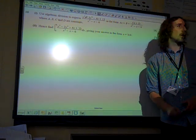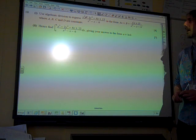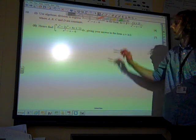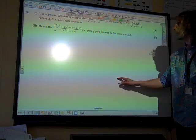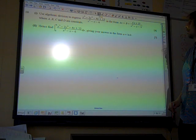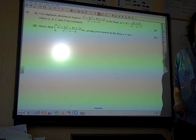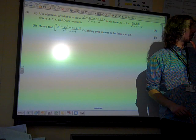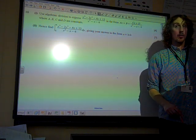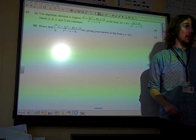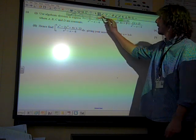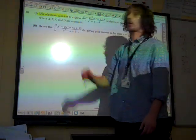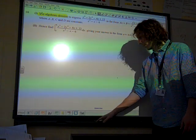We're on. Right. Question 10, the final question. Use algebraic division to express this fraction in the form AX plus B plus CX plus D over it. Right, there's no choice here. There's no good trying to do comparing coefficients or anything else. The question says use algebraic division so we have to use algebraic division.